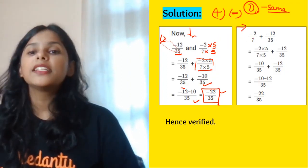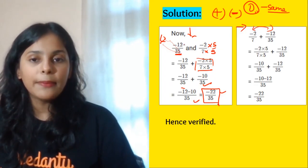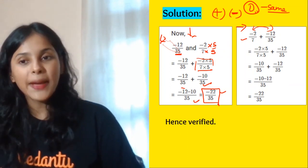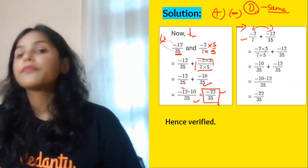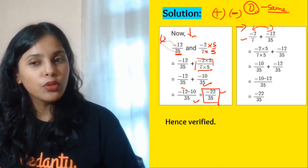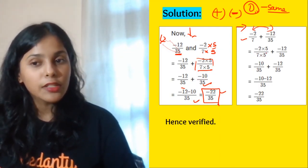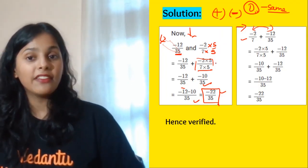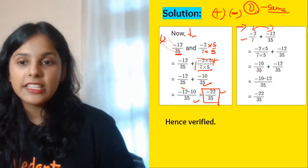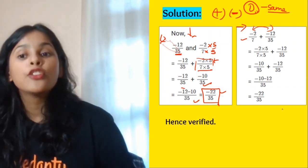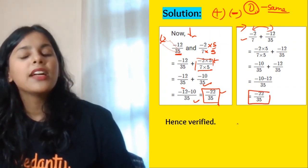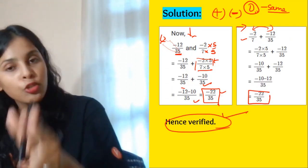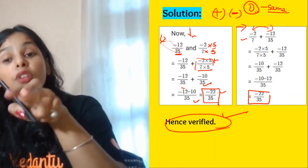Now reverse the numbers: minus 2 by 7 plus minus 12 by 35. Multiply minus 2 by 7 by 5 in numerator and denominator, getting minus 10 by 35. Adding minus 10 by 35 plus minus 12 by 35 gives the same answer: minus 22 by 35. Since the answer is the same, commutativity holds true for addition of these two numbers.